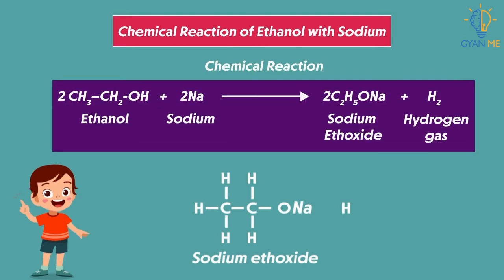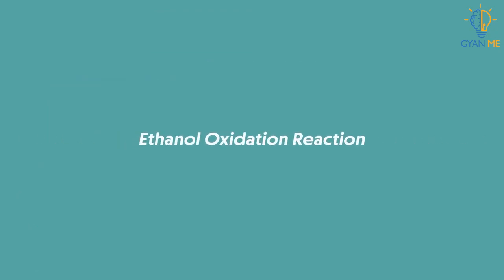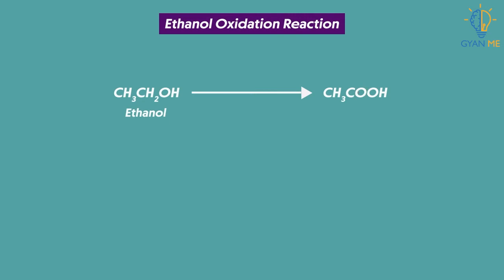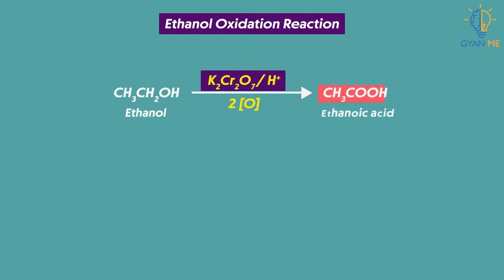The third chemical reaction of ethanol is the oxidation reaction. Oxygen will get added to the ethanol molecule. When ethanol is heated with acidified K₂Cr₂O₇ in the presence of oxygen, it gets oxidized to form ethanoic acid. In this process, acidified K₂Cr₂O₇ acts as an oxidizing agent, and one oxygen atom gets added to the ethanol molecule.